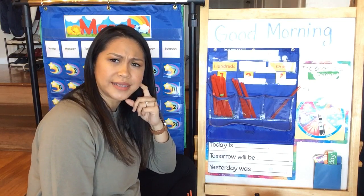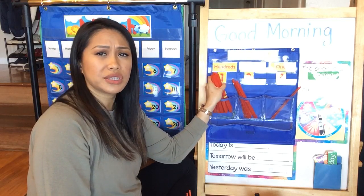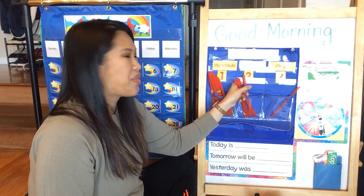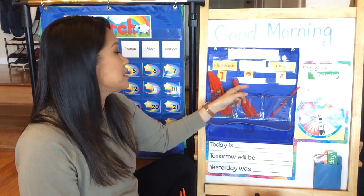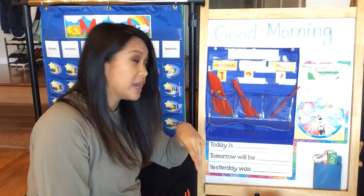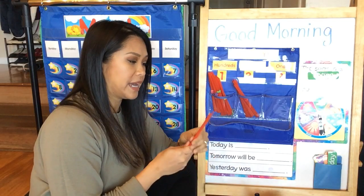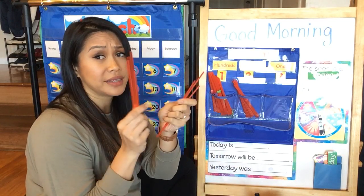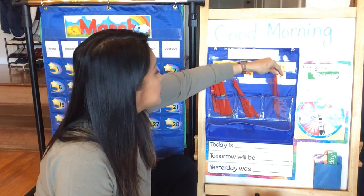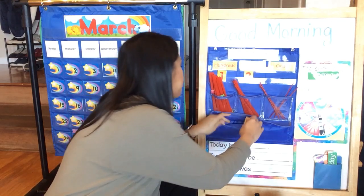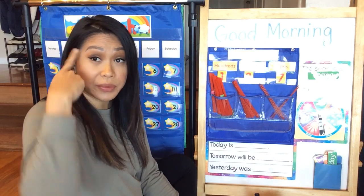Which number do I need to change? Do we need to change the one? No, because there's still just one bundle of a hundred. Do I need to change the three in the tens place? No, because there's still just three bundles of ten. Do I need to change the ones? I think so, because there's not just three now — there's actually the other four that we added. So that needs to be changed to a seven. So now we have a hundred and thirty-seven days of growing our brains.